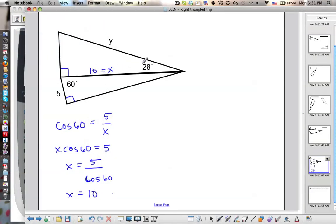X equals 10. Now, from 28, that is also cosine. So cosine of 28 equals 10 over y.